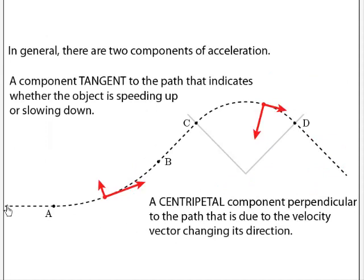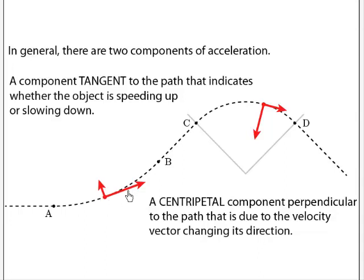In general, as the object is moving along this curved path, there are two components of acceleration. One is the centripetal component — the component perpendicular to the path — due to the fact that the velocity vector is changing its direction. But we also get a component of acceleration tangent to the path. That arises because the object, in this case the car, could be changing its speed — speeding up or slowing down — giving the tangential component of acceleration.